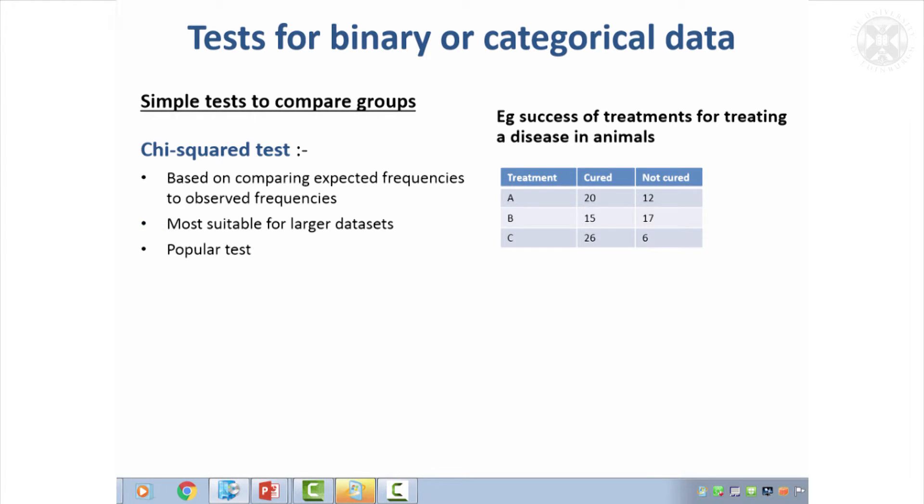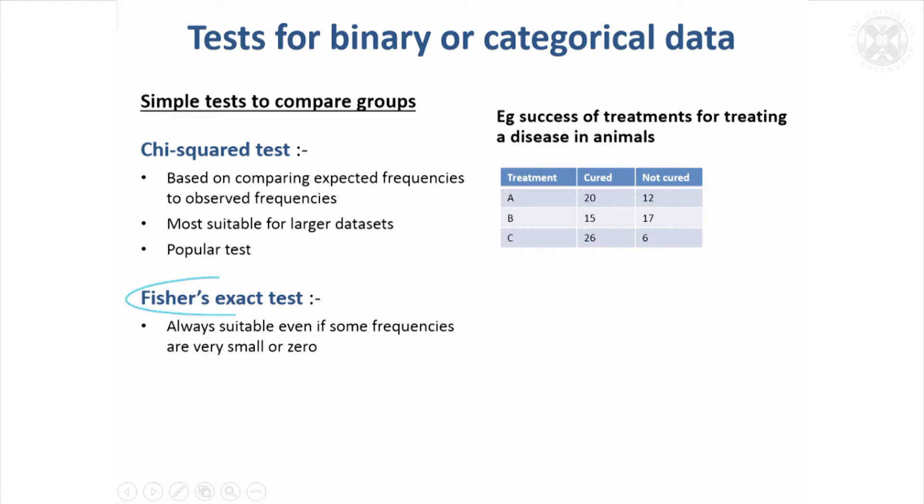But there is an alternative, that's known as something called the Fisher's Exact Test, and that's definitely named after a statistician called Fisher. And this works with the exact frequencies in each of these different cells, so you're never going to have to worry whether your dataset is large enough to make the assumptions needed to do the test.